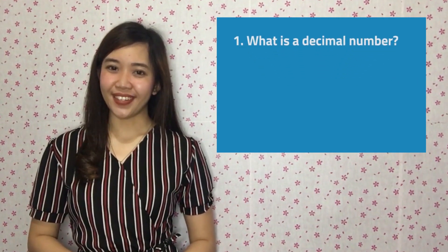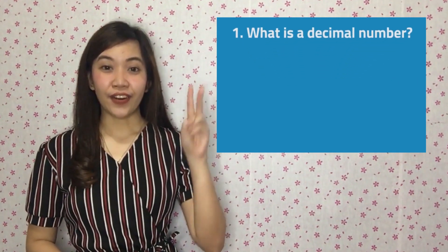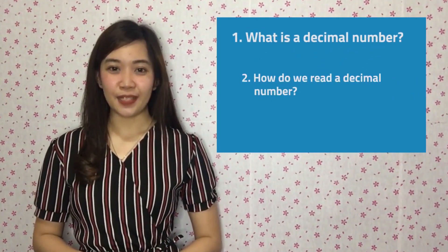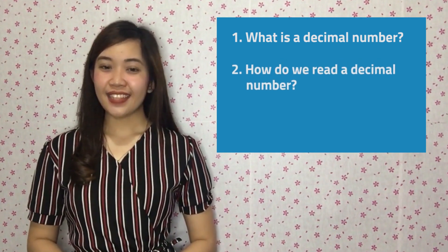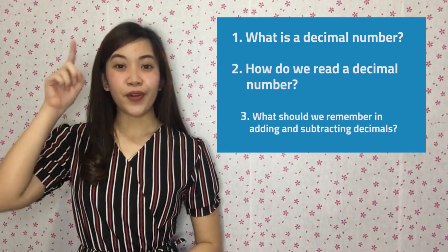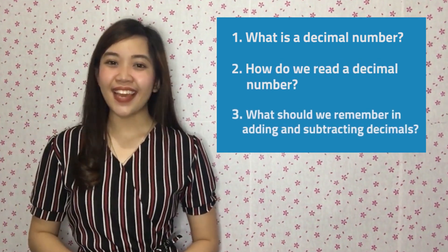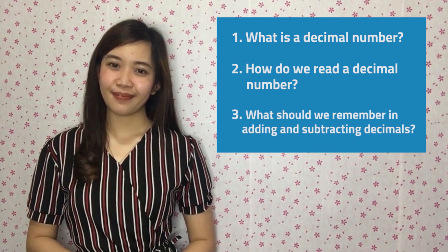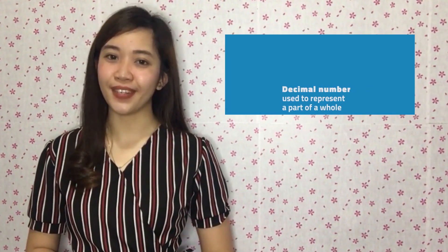As we learn how to add and subtract decimals, we will answer these three questions. First, what is a decimal number? Second, how do we read a decimal number? And lastly, what should we remember in adding and subtracting decimals? The numbers 5 tenths and 2,500 mentioned earlier are called decimal numbers.